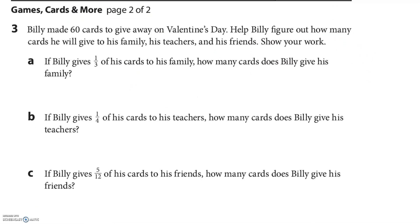Billy made sixty cards to give away on Valentine's Day. If Billy gives one-third of his cards to his family, so that's just one-third times sixty. Sixty-thirds, and sixty divided by three is twenty. Twenty cards.